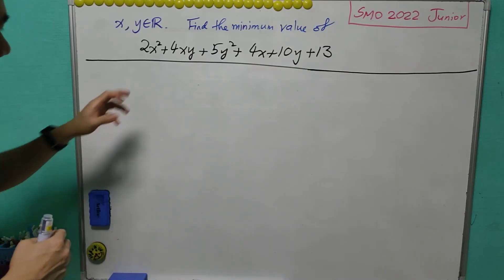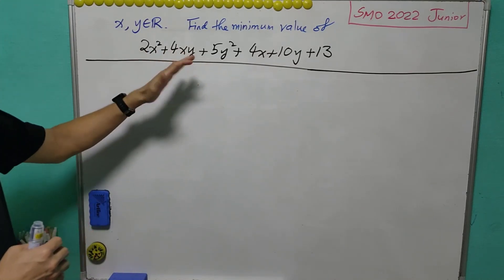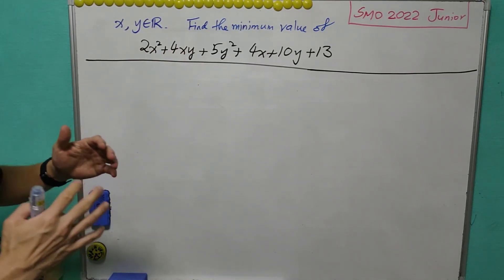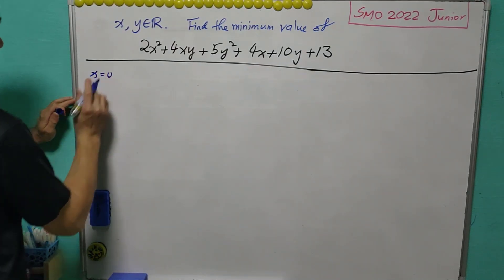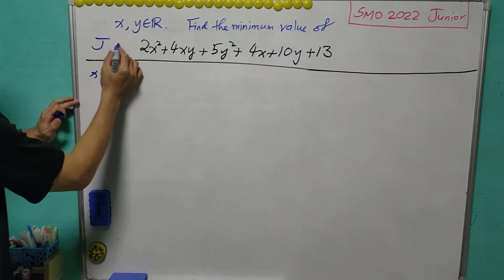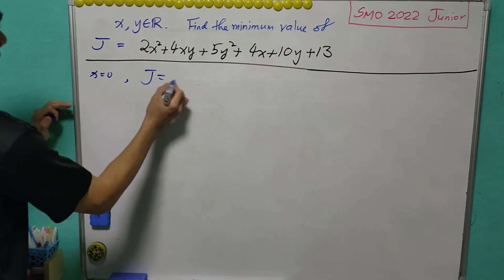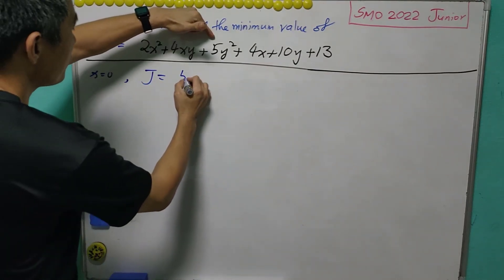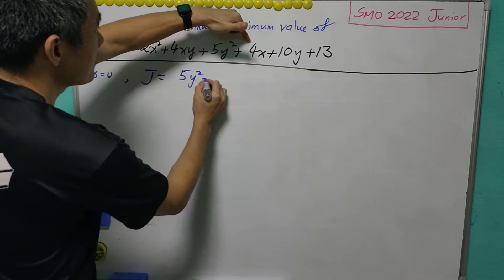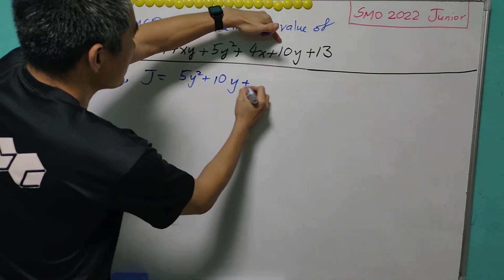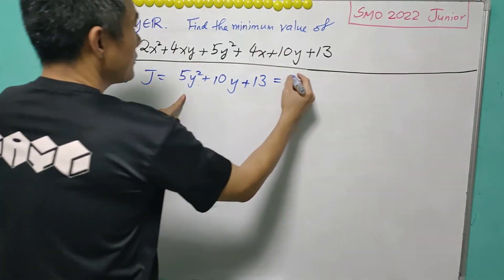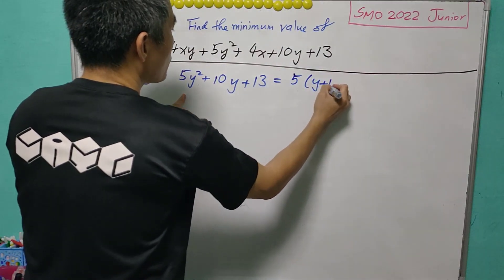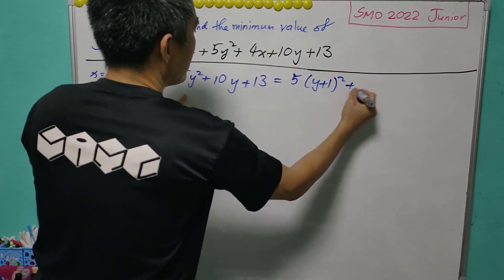You may notice that the expression involves x and y. Sometimes we can make a guess what is the answer. Let's say for example when x equals to 0, call this expression as J. J will equal to 5y squared plus 10y plus 13. And by completing the square, this will be 5(y plus 1) squared plus 8.